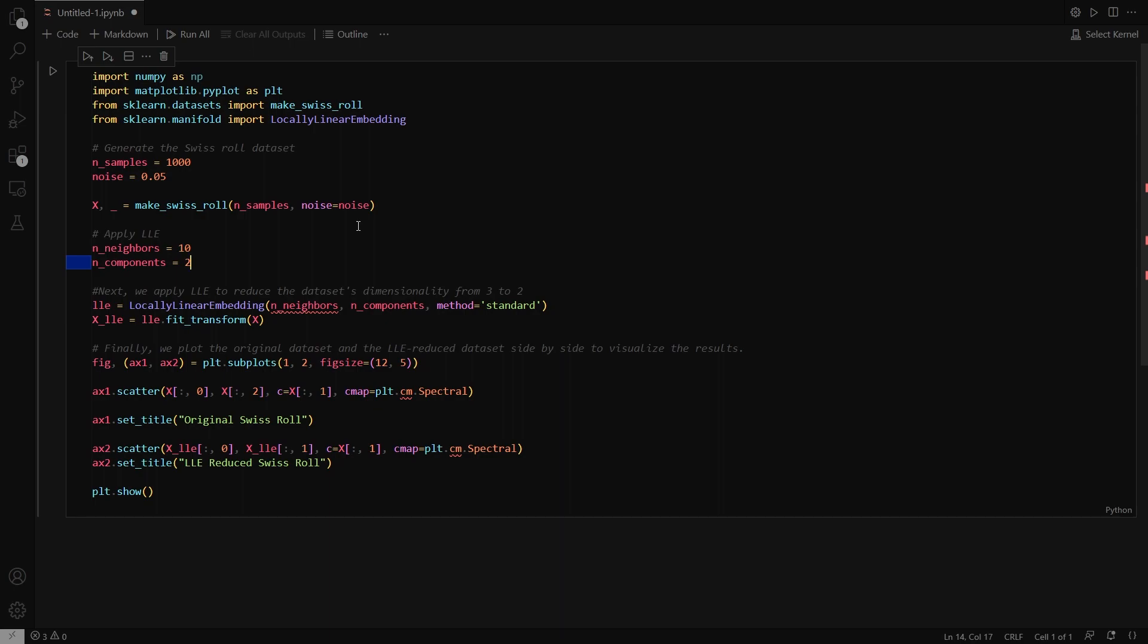Basically, I want to apply LLE to reduce the dataset's original dimensionality from 3 to 2. You create an instance of the locally linear embedding class and then apply FitTransform on that created instance and pass your input dataset X.